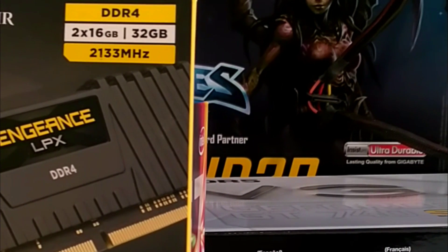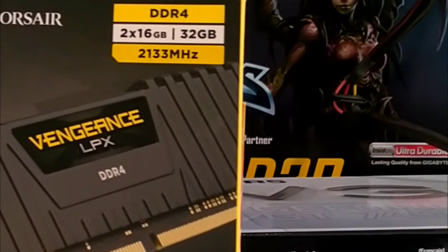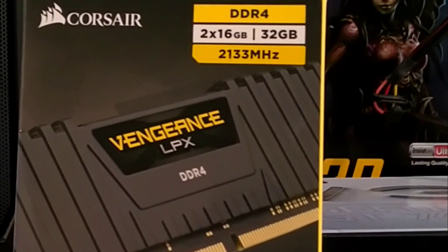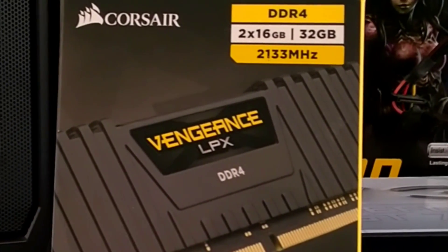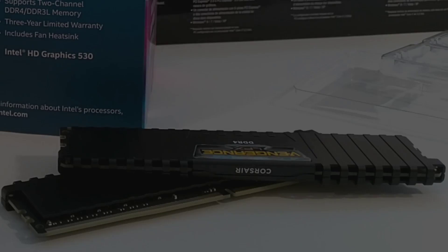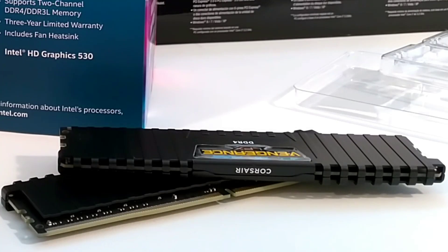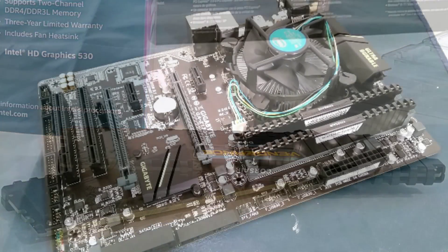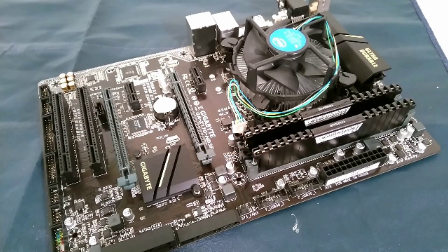Hi, this is Captain from FascinatingCaptain.com, and in this video we'll be choosing the right type of memory for your new build PC. Random access memory, or RAM, stores temporary data for the CPU to use to make processing faster. In general, more memory means a faster computer. 8GB is now the standard for most new builds, but I would recommend 16GB if your budget permits.